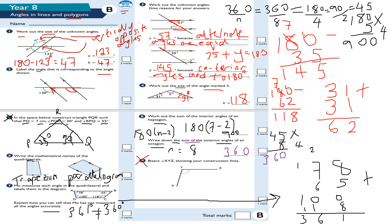Question number nine: bisect the angle XYZ, showing your construction lines. I've noted this across here because I don't have access to an online compass and protractor. But you would use your compass: put a little arc here, then — without changing the compass width — put a little arc from each arm of the angle so they intersect, then draw your line through Y and the intersection point with a ruler.